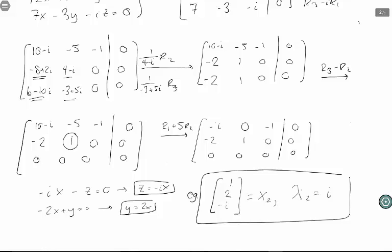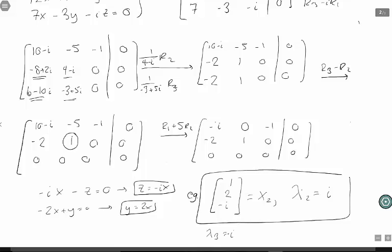Now if I wanted to find the third eigenvector, because my third eigenvalue was the complex conjugate of my second eigenvalue, I can choose my third eigenvector to be the complex conjugate of my second one. That would be 1, 2, positive i.